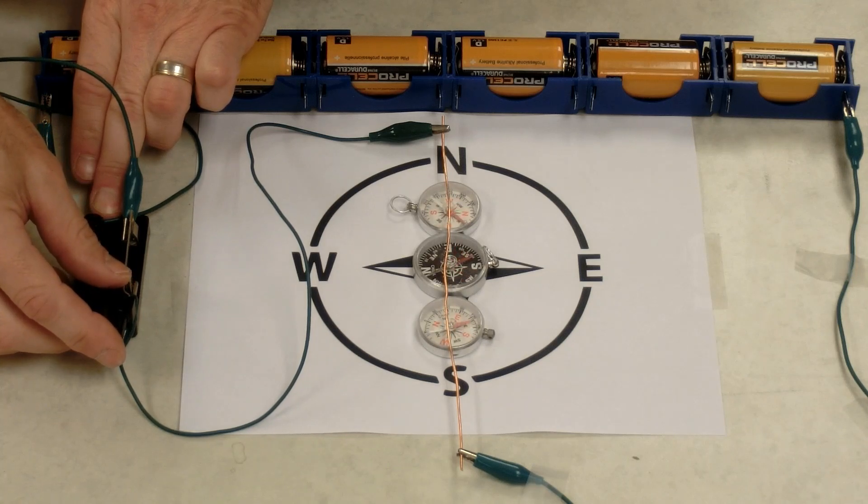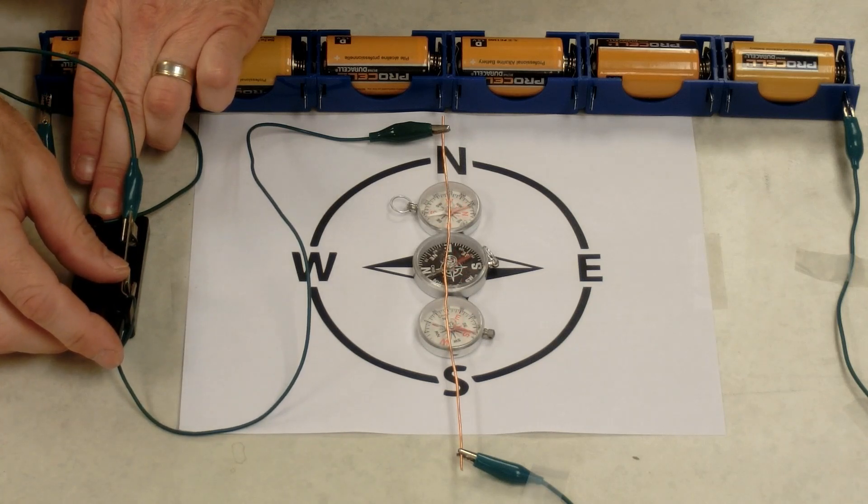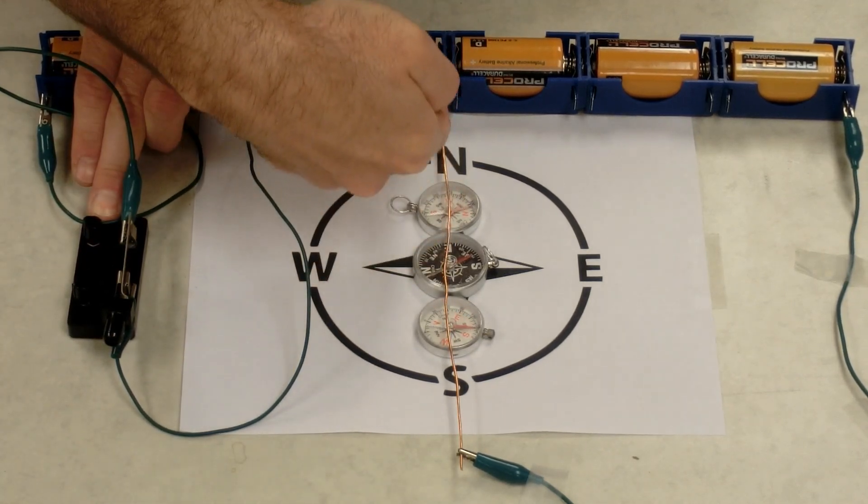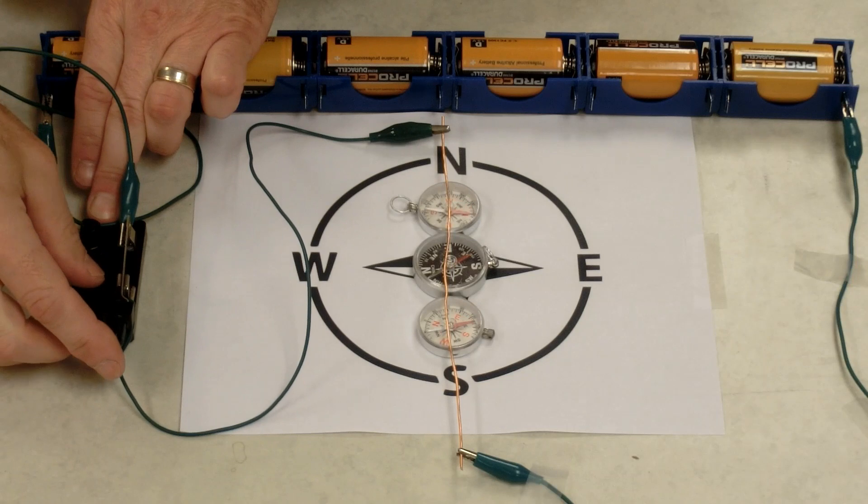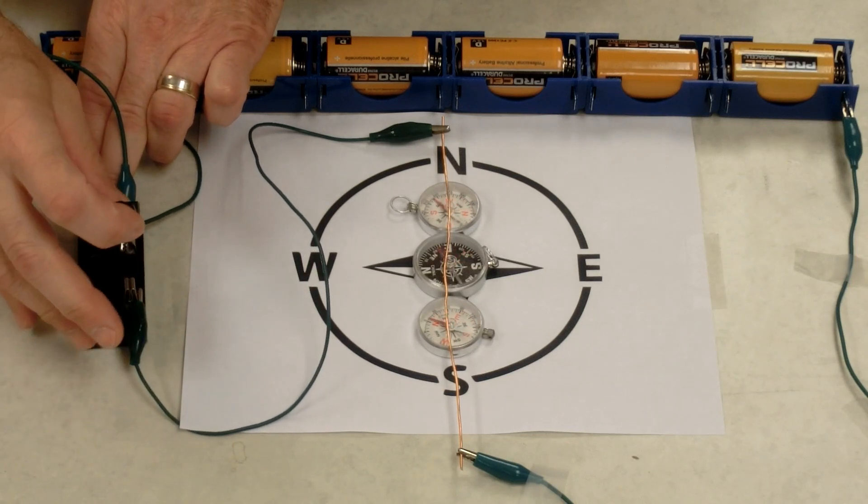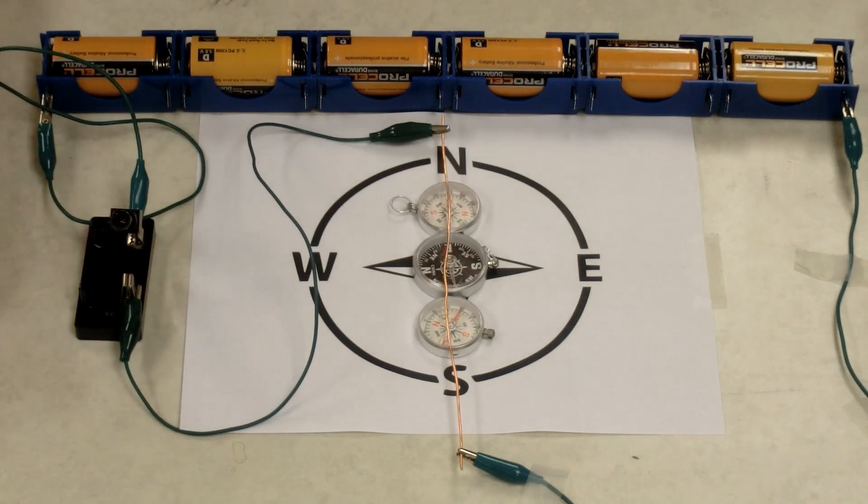All three compass needles deflected toward the east. So the magnetic field went from pointing to the north to pointing to the east. When I open the switch and turn the current off, the magnetic field goes back to its original orientation. So the compass needles face north again due to the earth's magnetic field.